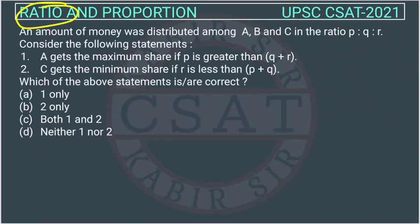This is the question of ratio and proportion asked by UPSC in CSAT paper of 2021. This is a tricky question. Many students were not able to solve it in the exam. So we will see it. An amount of money, money is not mentioned, was distributed among A, B, C in the ratio of P, Q, R.